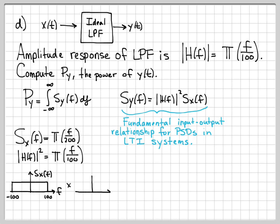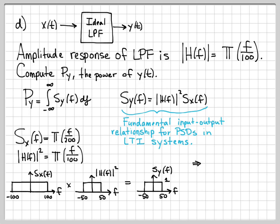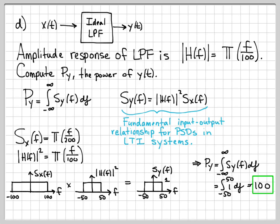Here is a plot of SX(f). To compute the output PSD SY(f), we multiply by the amplitude response squared of our system. The smaller rectangle limits the larger rectangle, and we end up with just a rectangle with a total width of 100 and amplitude 1. So SY(f) is a rectangle from minus 50 to 50 with amplitude 1. Now we compute Py by integrating: the integral from minus 50 to 50 of 1 gives us 100. So the power of the output signal is 100, which makes sense because the system removed half the frequency content — the input PSD spanned minus 100 to 100, while the output PSD only spans minus 50 to 50.